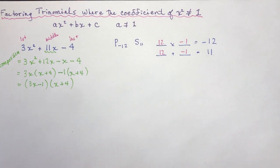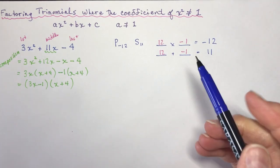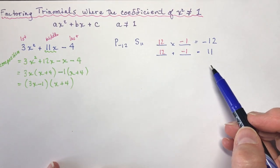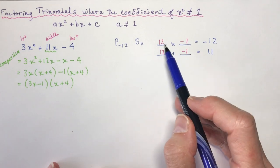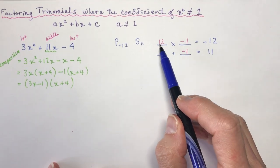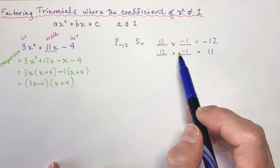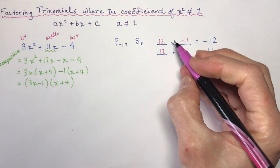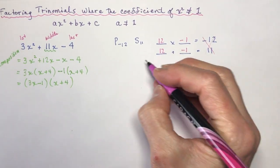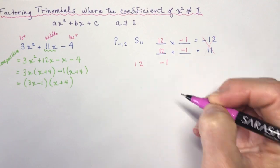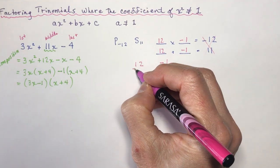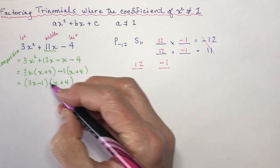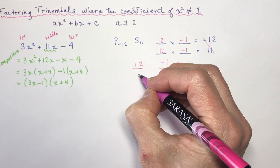Now watch — I'm going to show you Ms. Havrot's easy way to factor. You start the same way; you always have to do the product of the first and the last, and the sum of the one in the middle, find the two numbers that match. Now the next part is where the magic happens. You forget about the original numbers and you have these: 12 and minus 1. You make two fractions with the first on the bottom. What's the first? The first is 3, so I put 3 on the bottom.